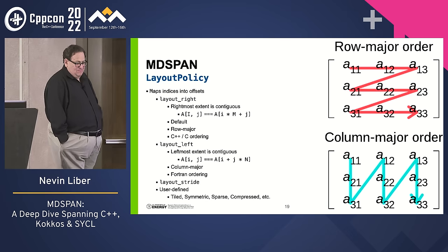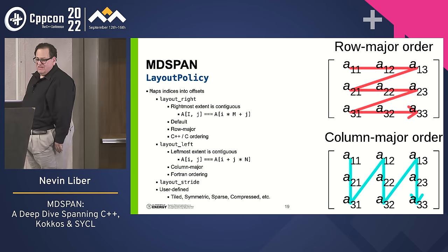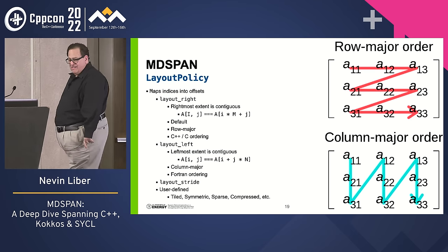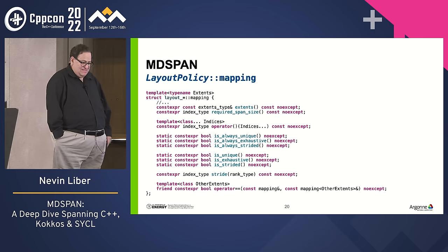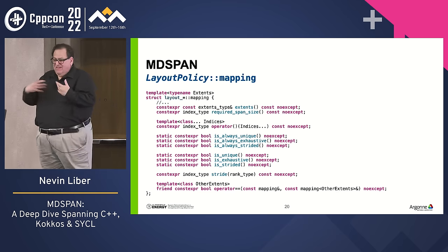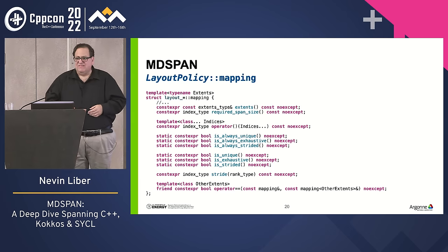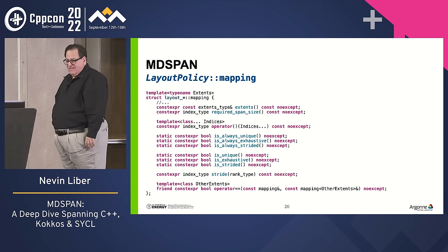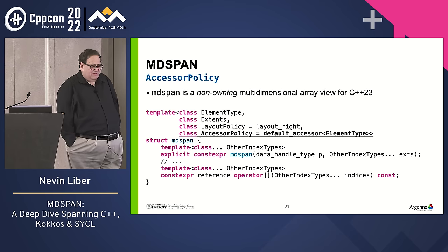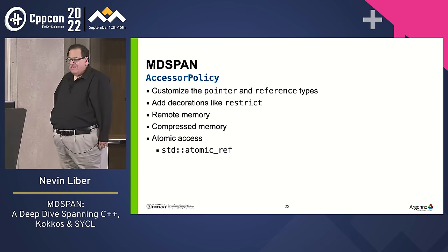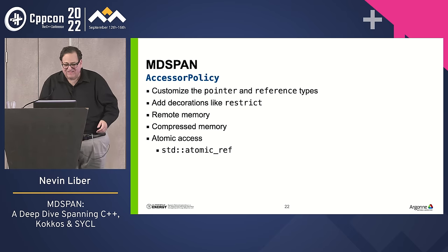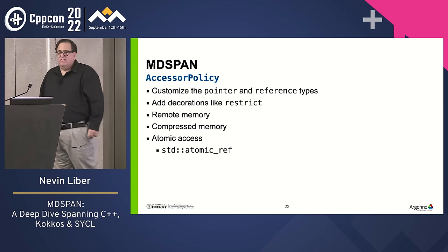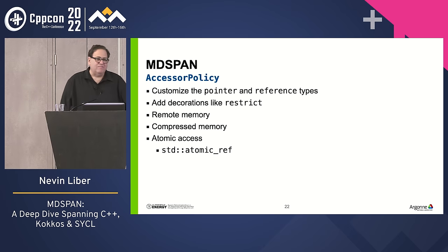Next we have layout_right, which is C-ordering (row-major); layout_left is column-major. There's also layout_stride, and you can do user-defined layouts — tile, symmetric, sparse, etc. Inside the layout there's a mapping that describes whether it's unique, exhaustive (which is contiguous, though in C++ contiguous implies linear, which isn't necessarily true), or strided, and you can compare mappings. Finally there's an accessor policy — that's where the pointer type, now renamed to data_handle_type, lives. This allows adding things like restrict, remote memory, compressed memory, atomic access, or atomic_ref inside it.